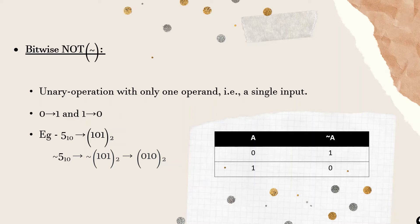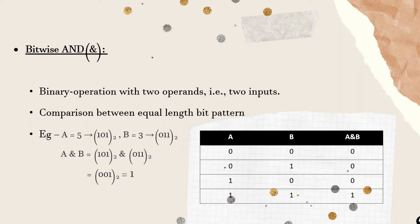From the left-hand side, 1 changes to 0, 0 changes to 1, and again 1 changes to 0. Next is the bitwise AND operator. Bitwise AND is a binary operator, meaning it takes two operands or two inputs. It operates on two equal-length bit patterns. If both bits in the compared position are 1, the resulting bit is 1; otherwise it is 0.